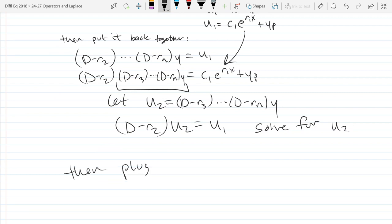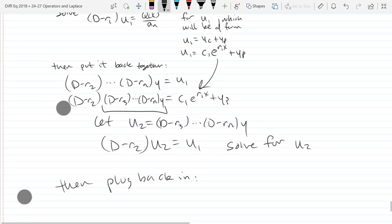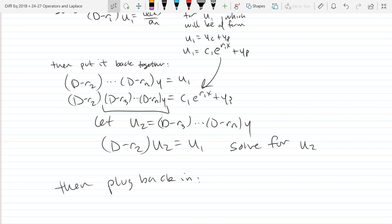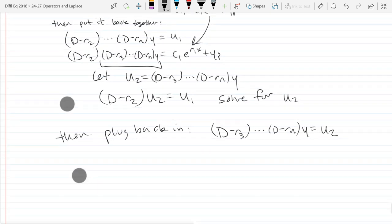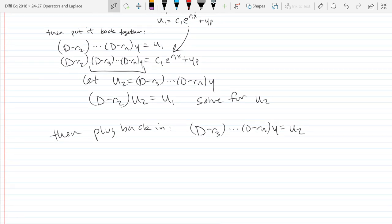Then you're going to plug it back in. So (D minus r3), (D minus rn) y equals u2. So that will take care of the first two linear operators, and you just repeat the process until you have no more left.